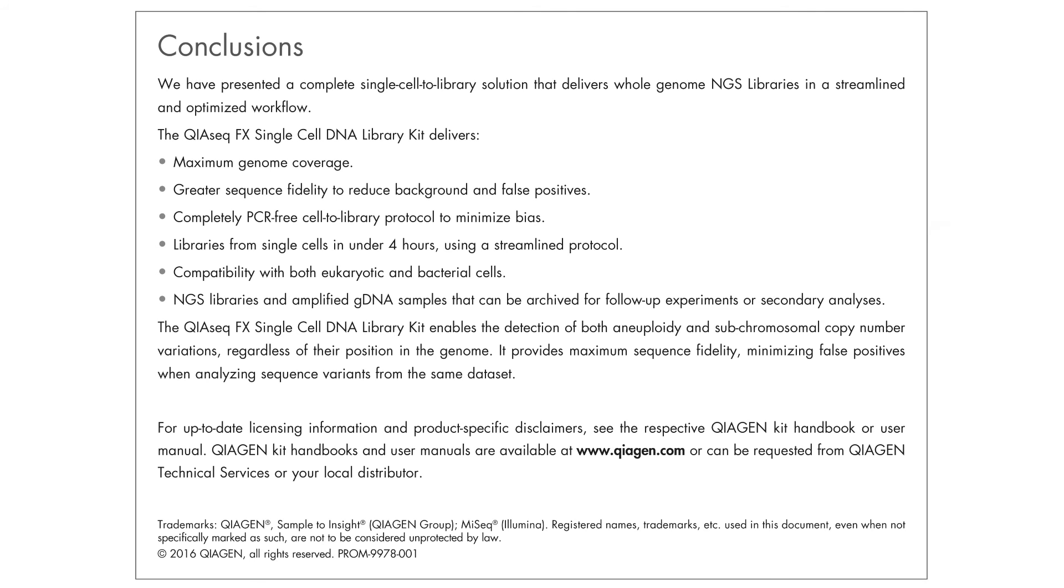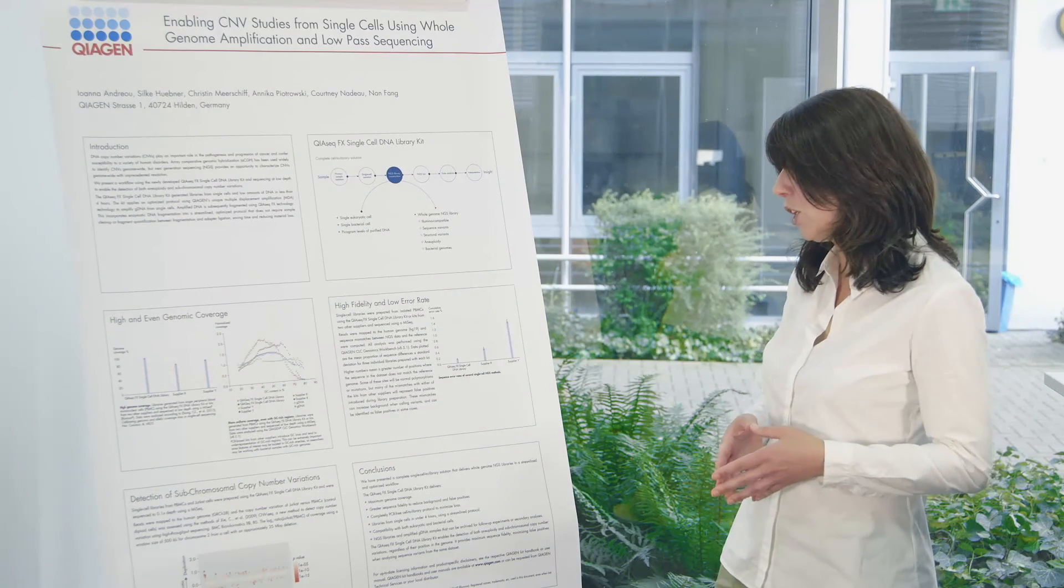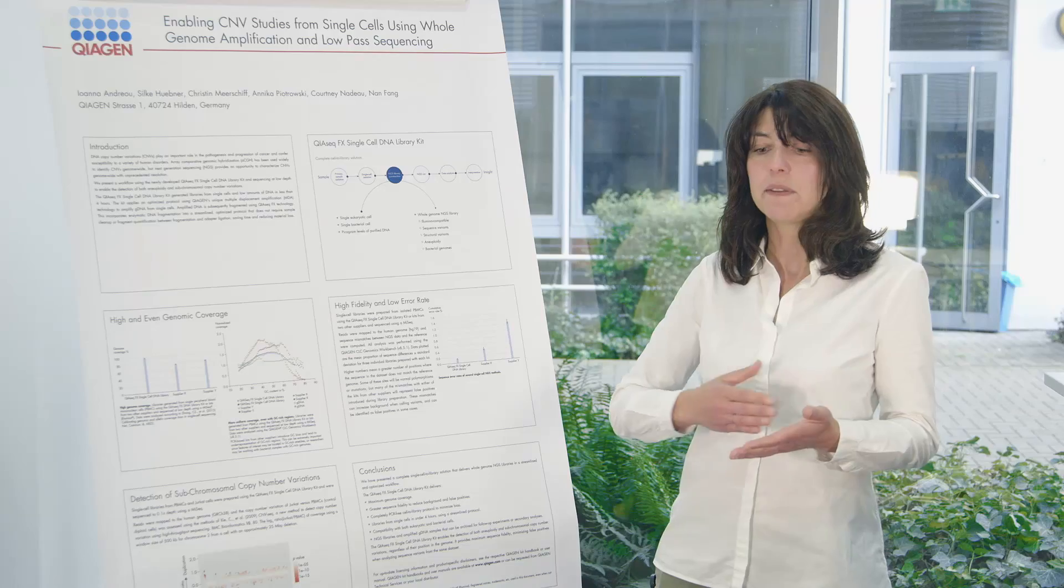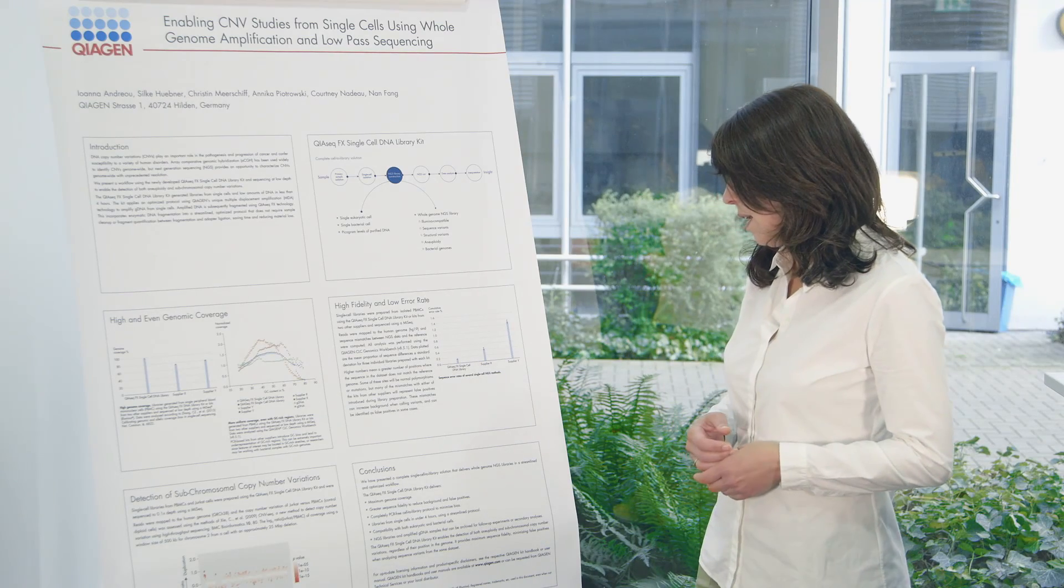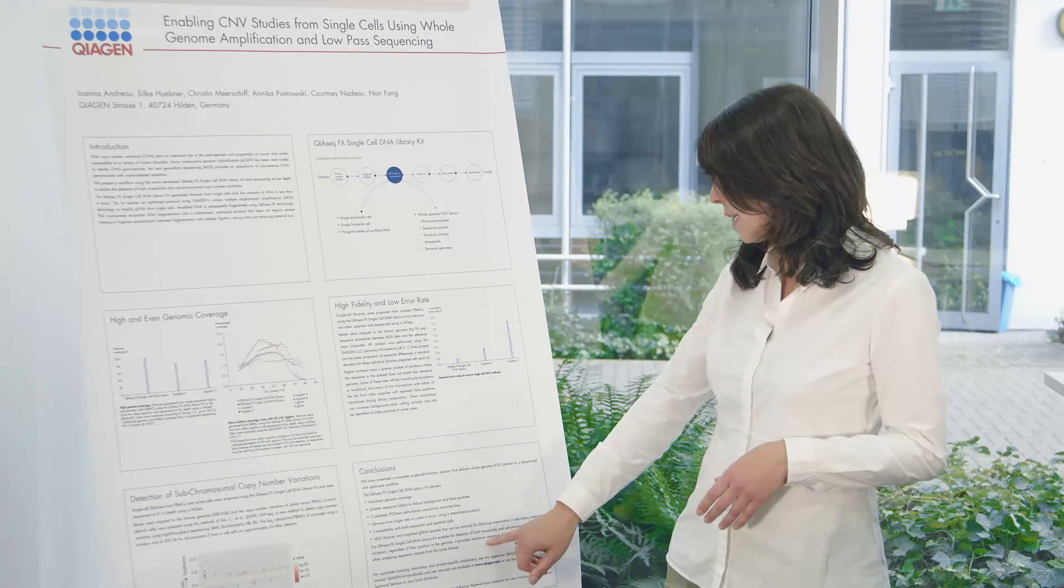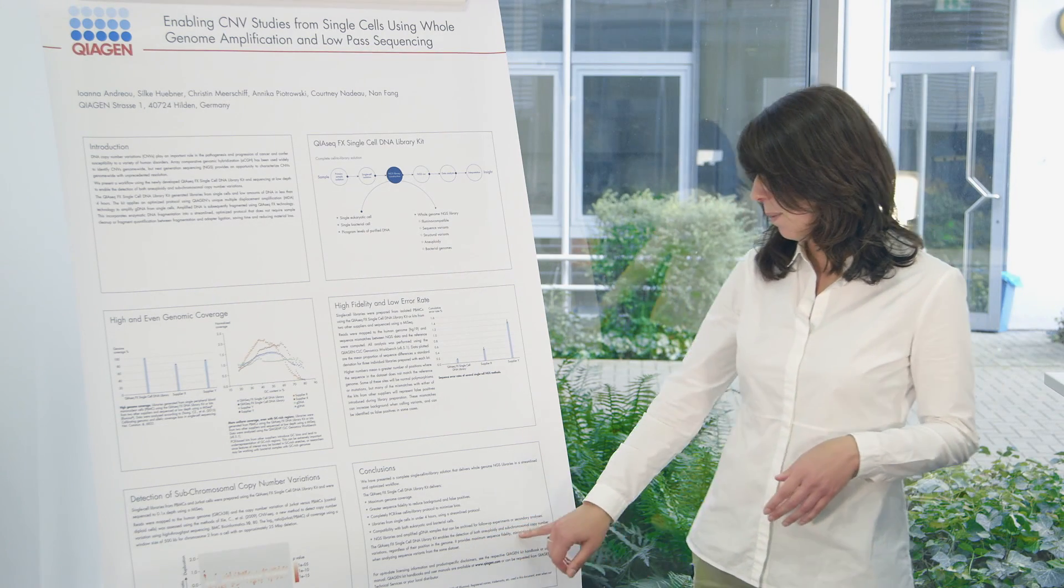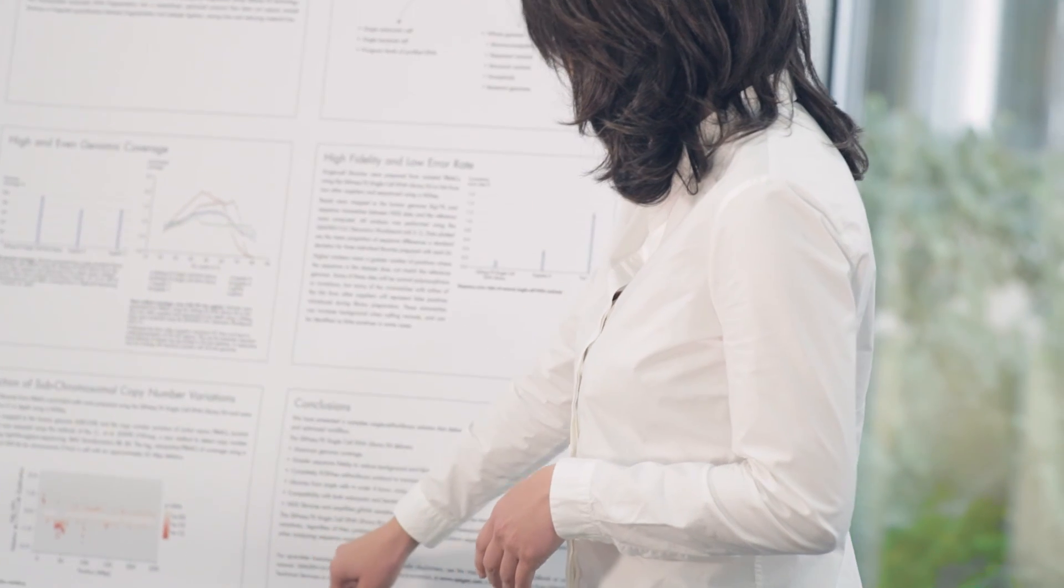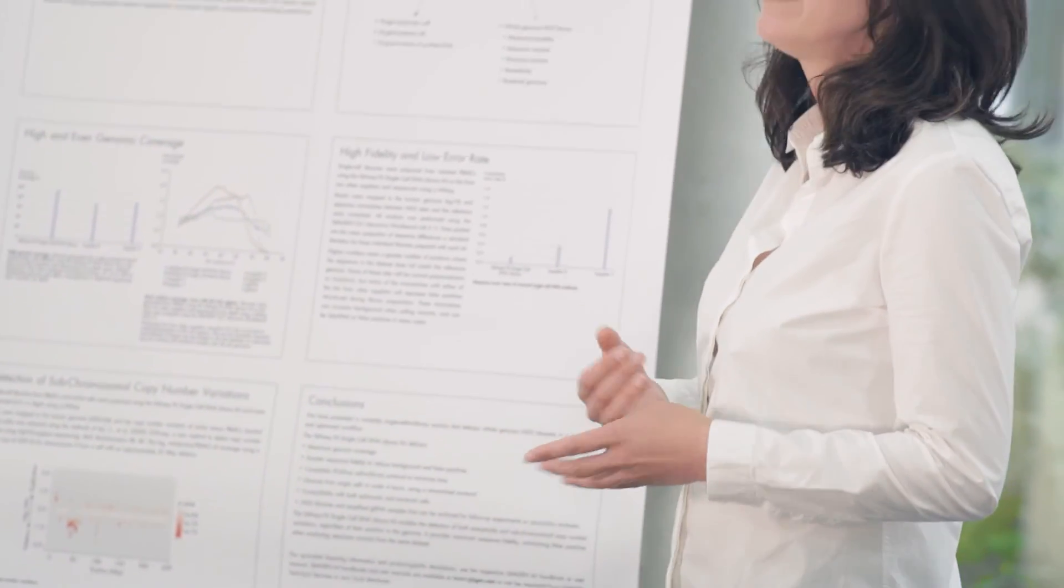So all in all the QIAGEN FX single cell DNA library kit enables the detection of both aneuploidy and subchromosomal copy number variation regardless of the position in the genome. We are doing the detection genome-wide and it provides us maximum sequence fidelity, minimizes false positives during the analysis of variants from the same data set.